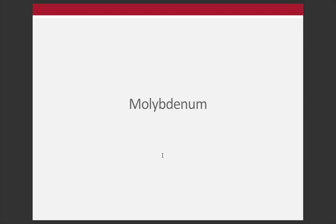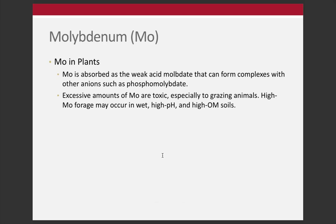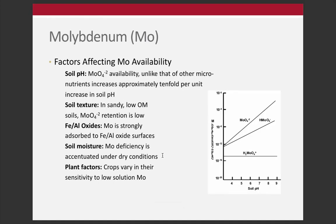Moving on to molybdenum. Molybdenum is unique in a number of ways. In terms of its function in plants, it forms different complexes. One thing I've heard of is that toxicity can occur, especially with forages and grazing animals. Molybdenum is unique in that as pH increases, molybdenum availability increases — so forage crops especially can get loaded with molybdenum, and that can be problematic for the livestock that graze on them.